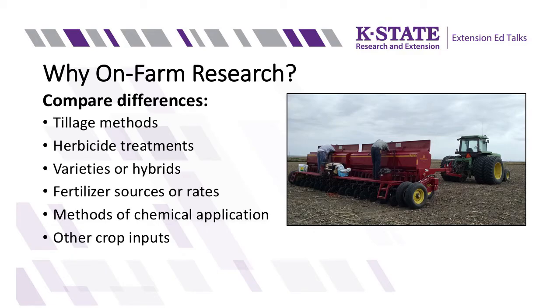So why do we do on-farm research as Extension agents? We can do comparisons of many things, such as one of the very common things we do here in Kansas — being that Kansas is the wheat state — quite a few wheat variety demonstration plots. In those variety demonstration plots, one of the main things we're doing is looking at varieties and comparing for yield, but we can also incorporate other things. We can look at tillage methods: no-till, minimum till, or conventional till.